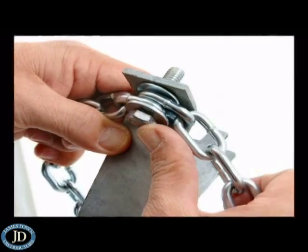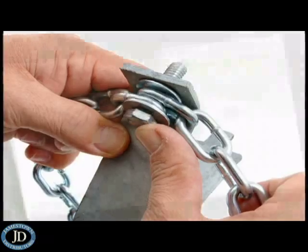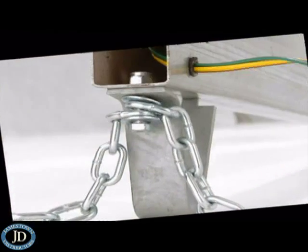Now let's attach the safety chains and tongue skid to the front of the trailer. Insert the bolt with the washers through the chains as shown.